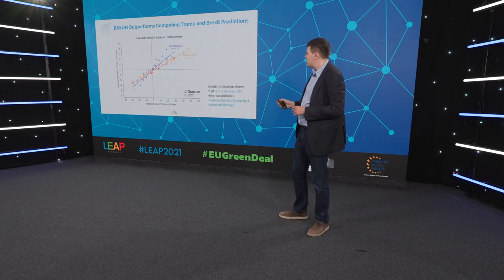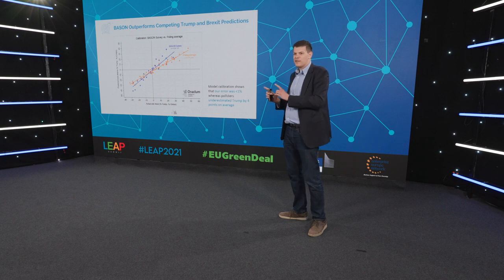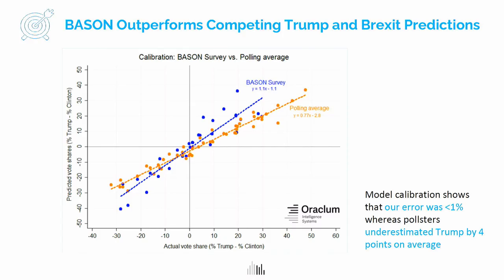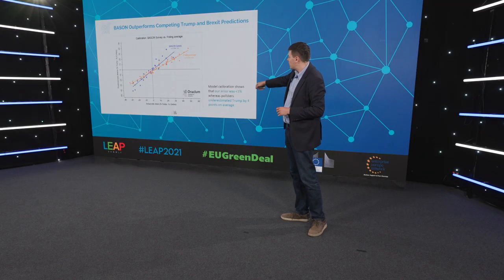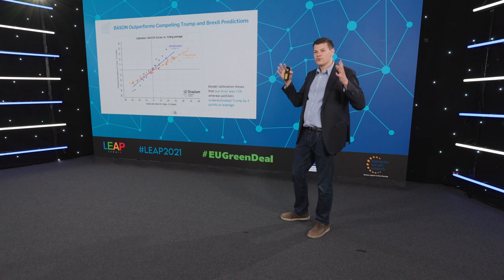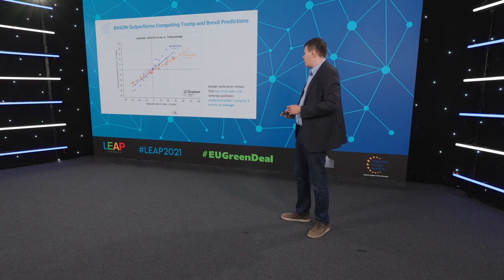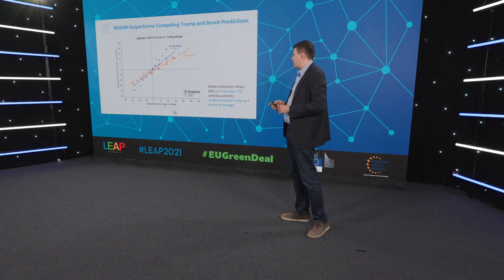This is called the calibration of the model. Calibration means how close you are to the 45-degree line — the more precise the model, the closer you are. The farther away you are from the 45-degree line, the less precise you are. You can see that our error was less than 1%, whereas the other pollsters were systematically underestimating Trump by four points on average. We got some media attention for that.